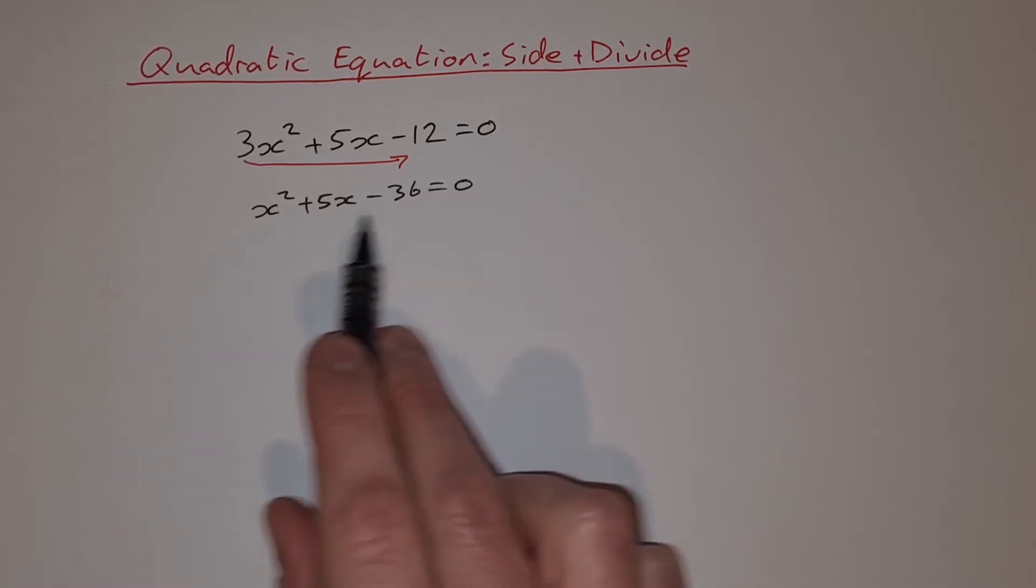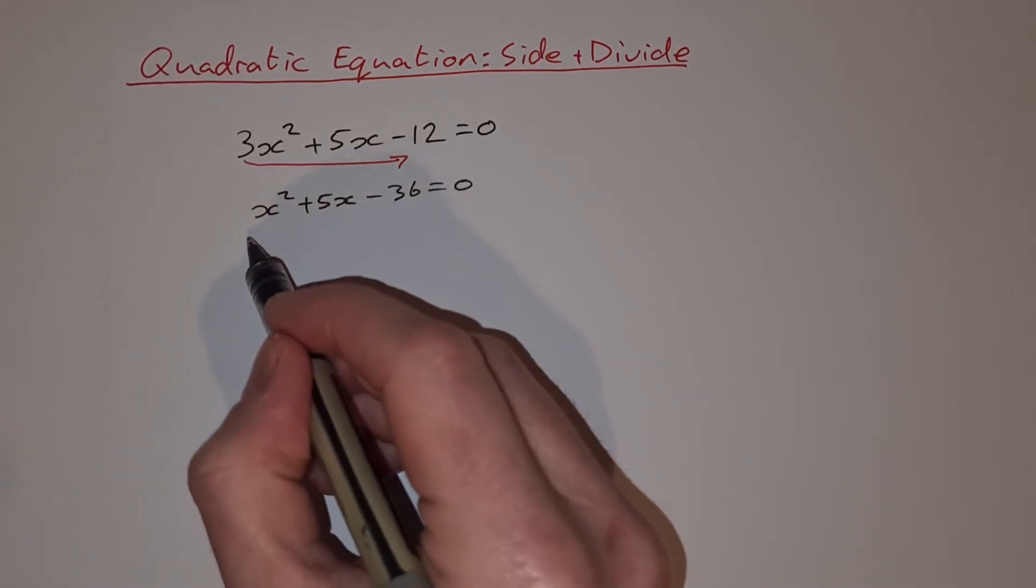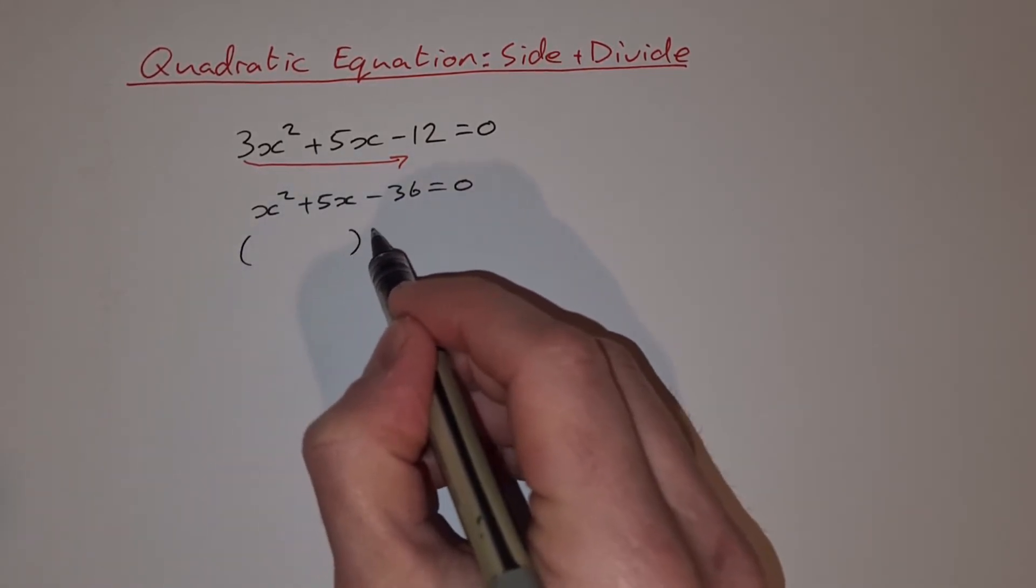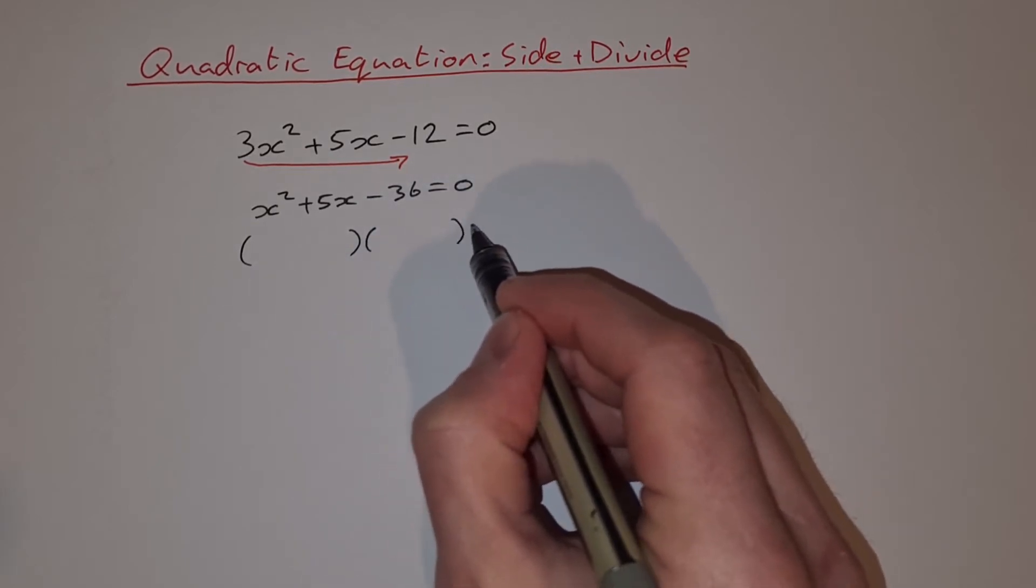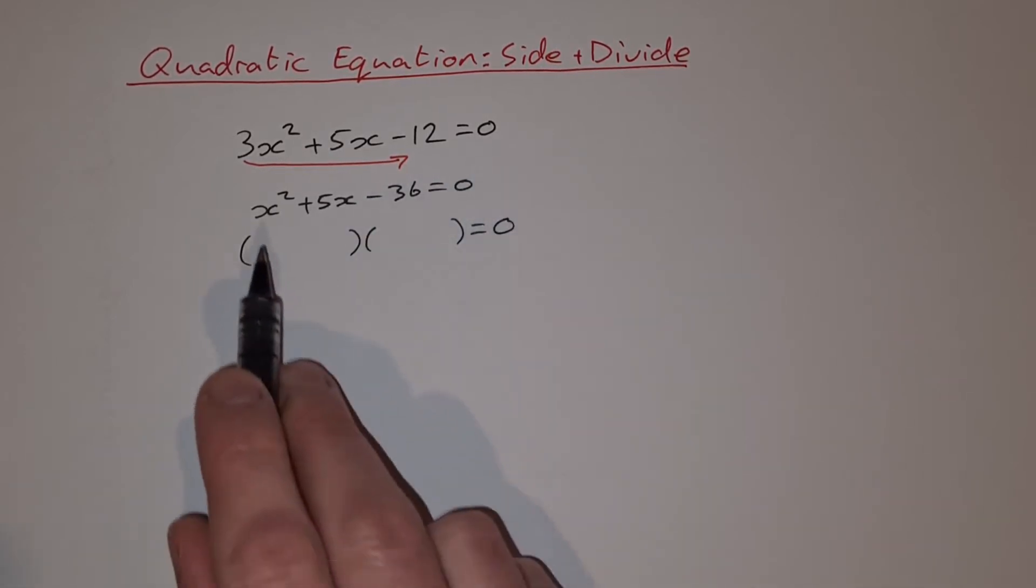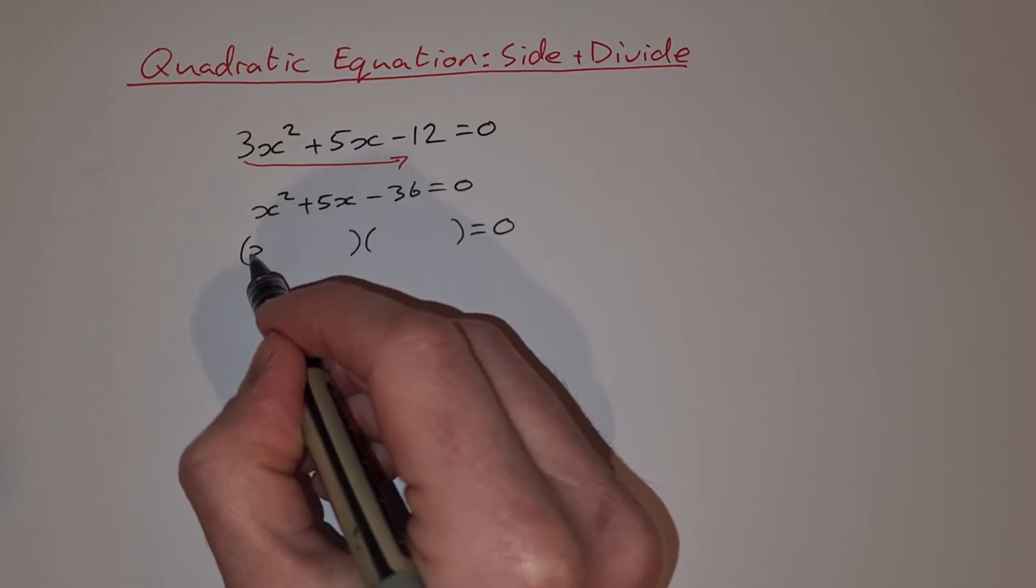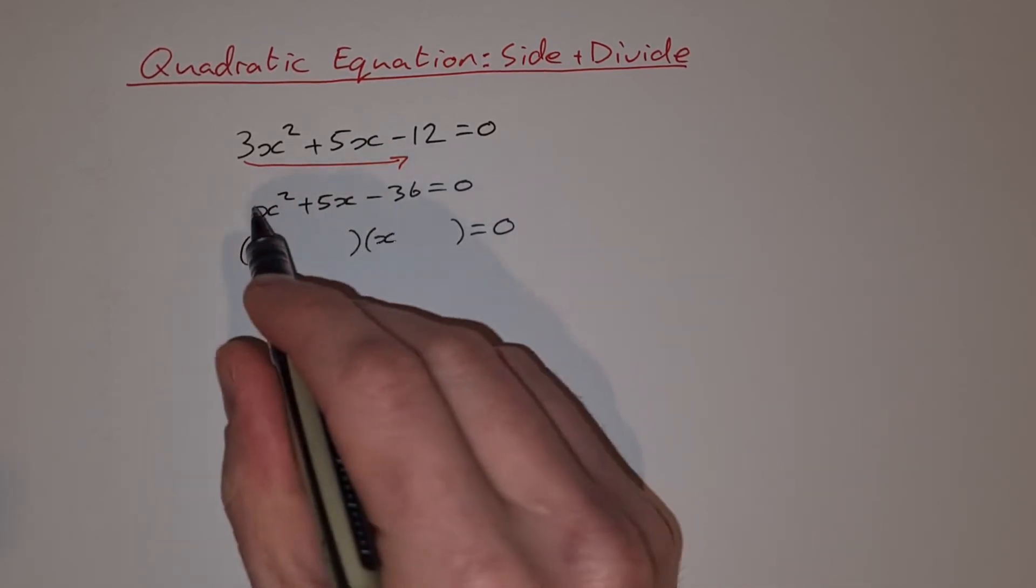So now we're going to factorise this as we normally would, so we can factorise this fairly easily now because the coefficient of x squared is 1. So we're going to have x and x because that'll give you x squared.